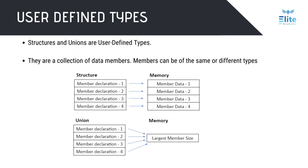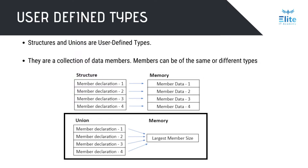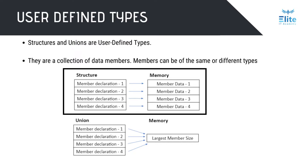The main difference between structures and unions is that while all members of a structure are allocated memory, the size of a union is the size of its largest member. That is, the members of a union all share the same area of memory. Therefore, only one member of the union can contain data at a particular instance, whereas in a structure, all the members can contain data at the same time because each one has its own area of memory.